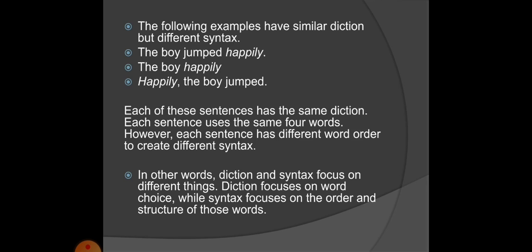In other words, diction and syntax focus on different things. Diction focuses on word choice while syntax focuses on the order and structure of those words. So, diction is the choice of words the writer or speaker uses to convey their message to the audience, while syntax is how words are arranged to make phrases and sentences.